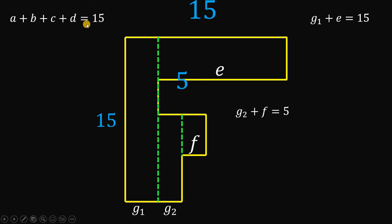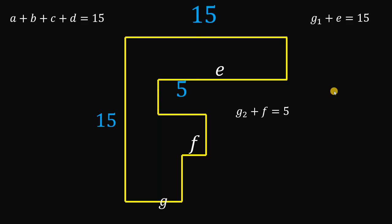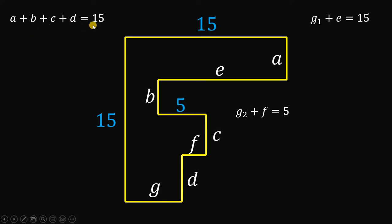We now have the sum of all variables: A plus B plus C plus D equals 15, G sub 1 plus E equals 15, and G sub 2 plus F equals 5. Note that G sub 1 plus G sub 2 equals G.